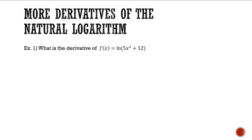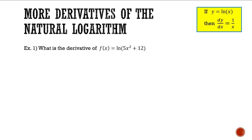Our first example: what is the derivative of f(x) = ln(5x² + 12)? In our previous videos we had the rule that if y = ln(x) then dy/dx = 1/x. But ln(5x² + 12) can't be manipulated into the form y = ln(x), so those tricks from the previous video won't work here. We're going to use one of the most tried, true, and tested tricks in calculus: the chain rule.